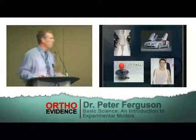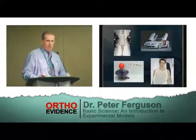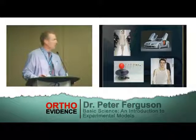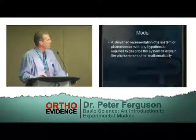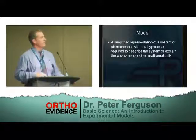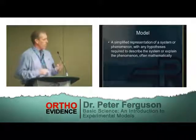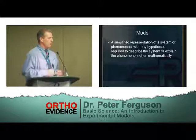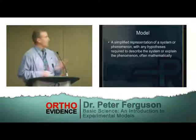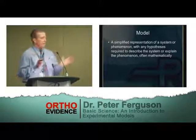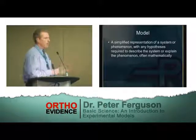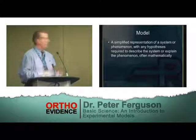We're talking about experimental models or models in science. The word 'model' has about 12 definitions under a noun in the dictionary. The one most pertinent to what we're studying is: a simplified representation of a system — for example, a biological system or a phenomenon — really with any hypotheses required to describe the system or explain the phenomenon, often mathematically, sometimes experimentally. That's really what a model is. We're trying to take a real system and simplify it so that we can do some further investigation of it.